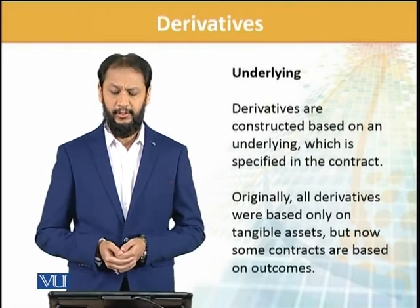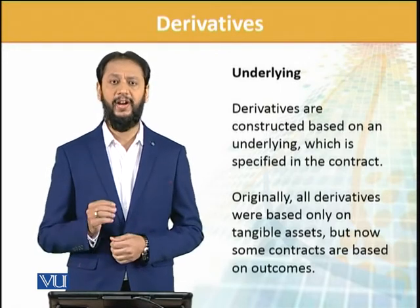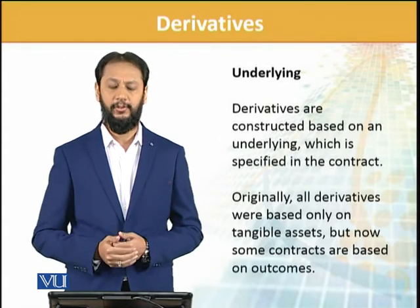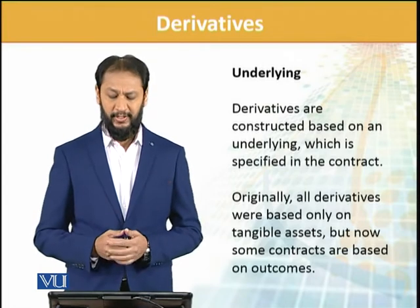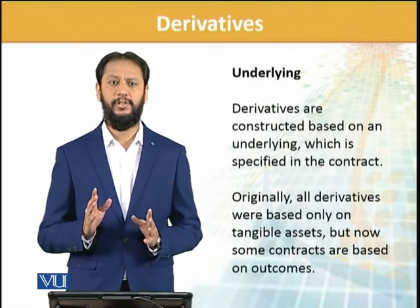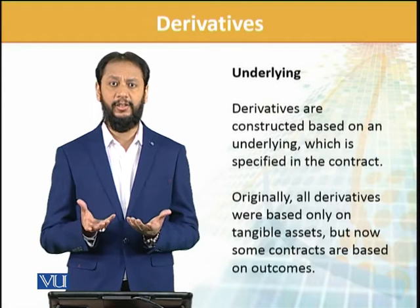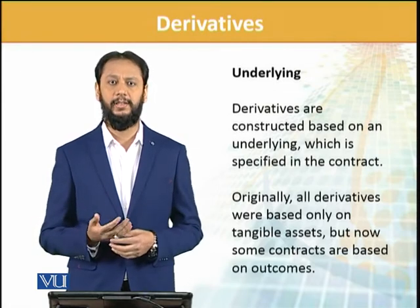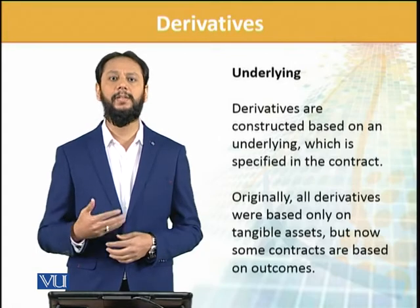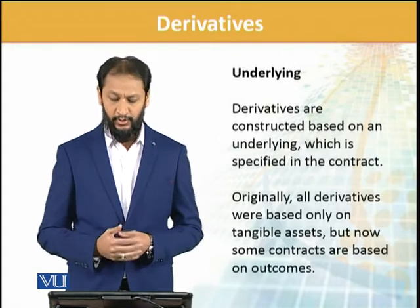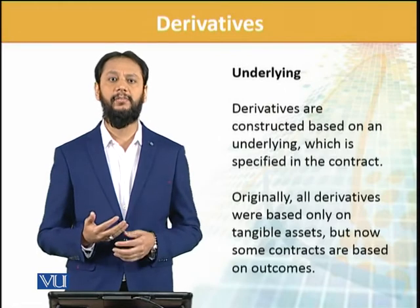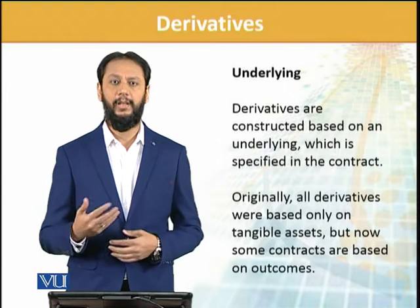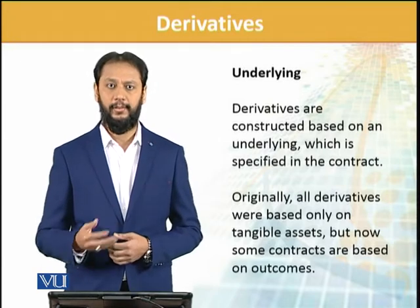Derivatives are constructed based on an underlying which is specified in the contract. The contract will state which underlying is being referred to. Originally, all derivatives were based on tangible assets — assets with a tangible physical existence, such as wheat and gold. But as time passes, there is evolution, and now we also have outcome-based derivatives — such as what the weather will be — and multiple other options are coming into the stream.